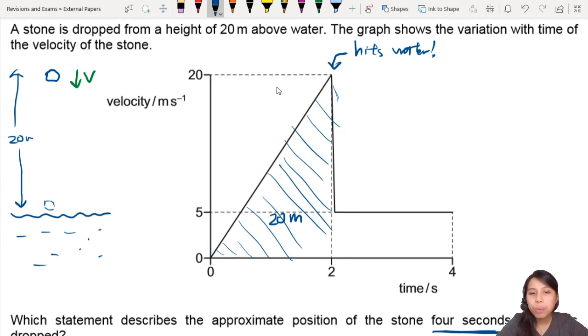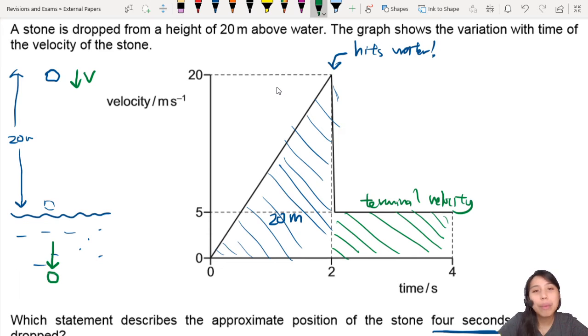So four seconds later, what is this area right here? The green color one. When it's in the water, how far does the stone actually travel? Because it will still fall down now. But it's going to fall at a terminal speed, constant speed. If you're wondering why, that's because there's upthrust or drag acting on the sphere.